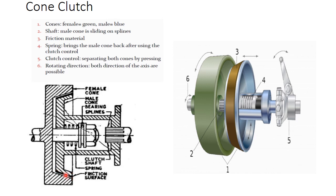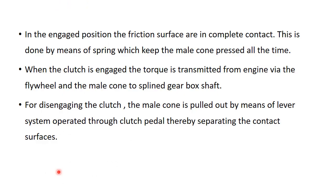This is the surface area, the surface area that is called lining, that is made of material just like rubber or leather. In the engagement position, the friction surfaces are in complete contact.